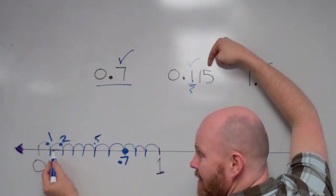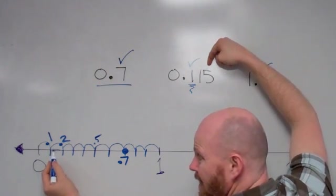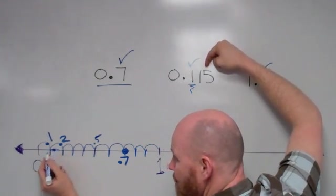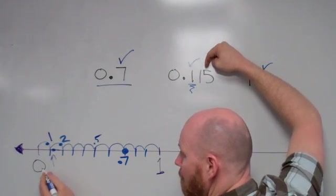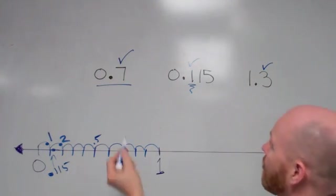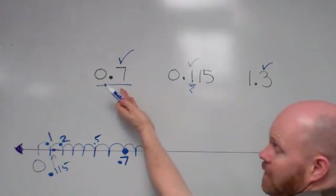The 5 means I'm going to cut the space between there into 10 equal-sized spaces. And so really, 0.115 is going to be way the heck down here, 0.115.